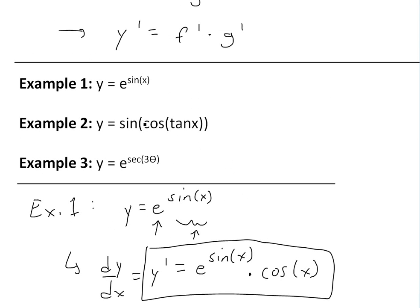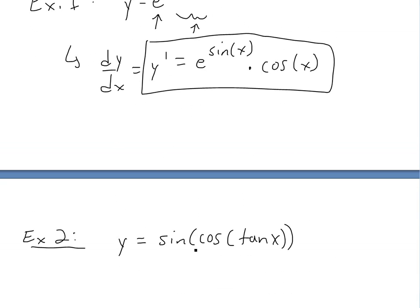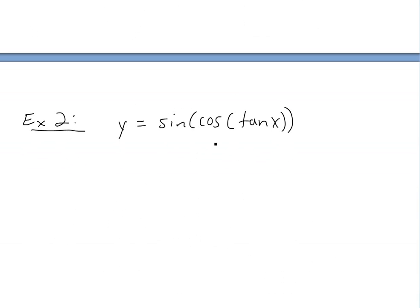Example two is a function within a function within a function — kind of like inception. Example two is y equals sine of cos of tan of x. We can apply the chain rule twice. Our outer function is sine, the first inner function is cos of tan of x, and then cos is the outer function with tan of x as the inner function. This is why it's called the chain rule — because you form a chain of derivatives.